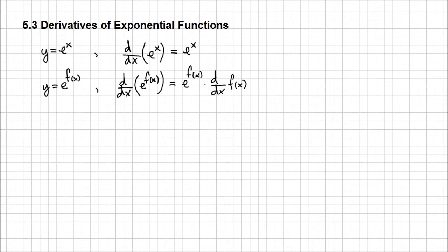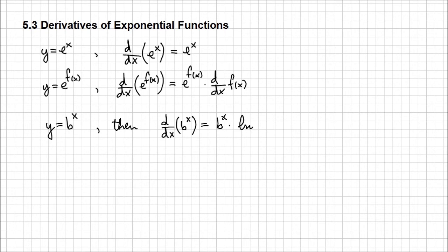Let's now introduce one more rule for an exponential function, y equals b to the power x. For any b that is positive and different than 1, and not equal to the special number e, the derivative d/dx of b^x is going to be b^x, just like e^x, but also multiplied by ln(b) — the natural logarithm of b. We can also use Lagrange notation.